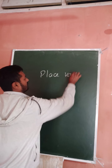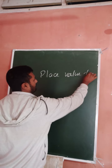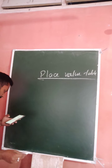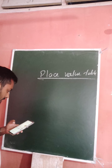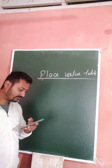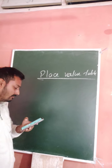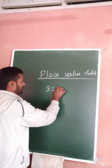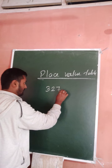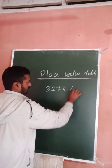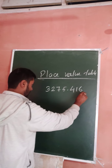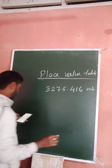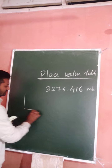Look at page number 197. We are going to represent 3275.416 in the place value table. This number is given in meters, and you have to place it correctly in the place value table.